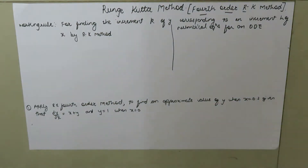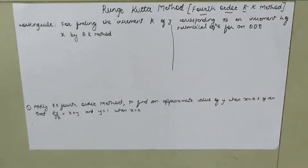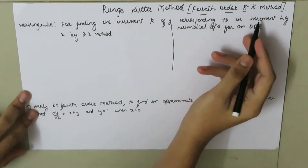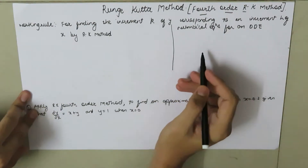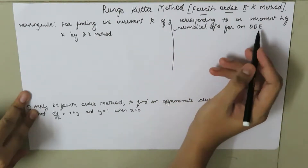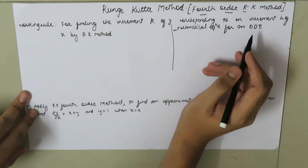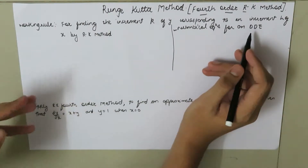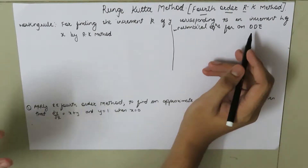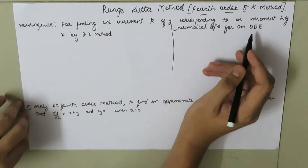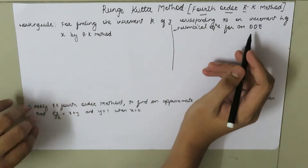Today we are going to study the Runge-Kutta method, which is also called the 4th order RK method. This 4th order RK method is used to find the numerical solution for an ordinary differential equation. In the Runge-Kutta method, the value of Y is calculated in short steps for equal intervals of X, so it is also called the step-by-step method. It is also used to find the starting values for Milne's method.